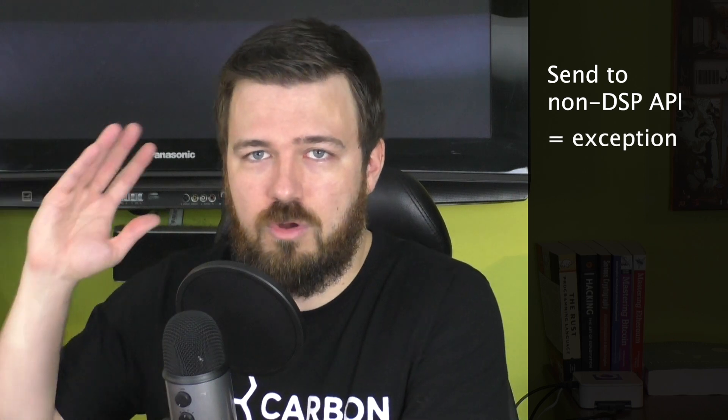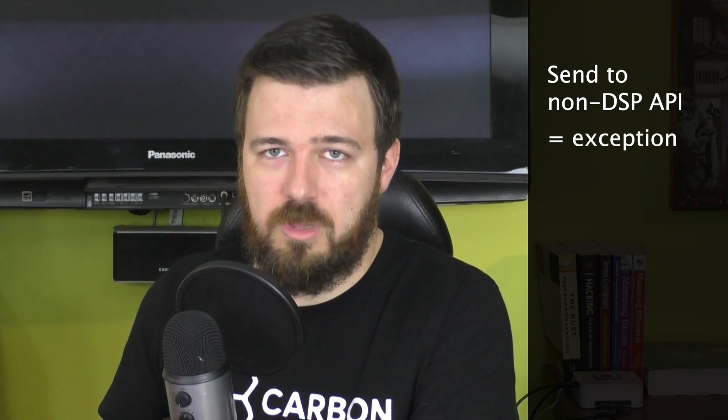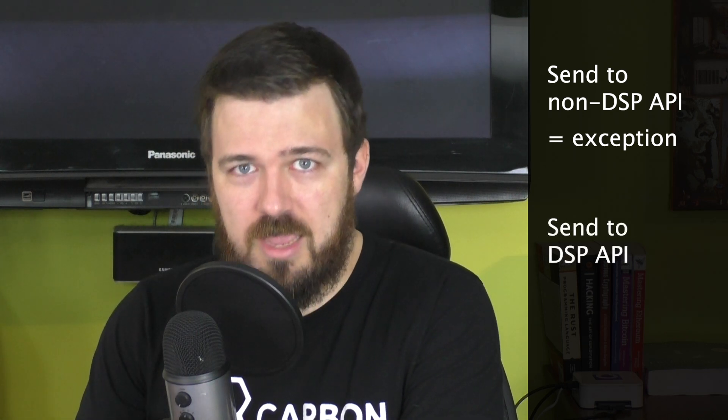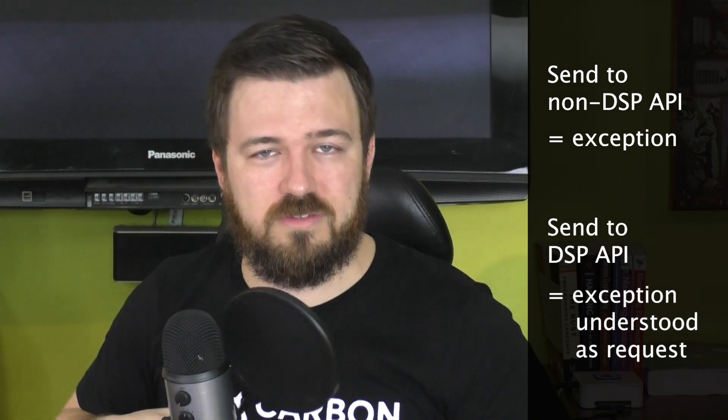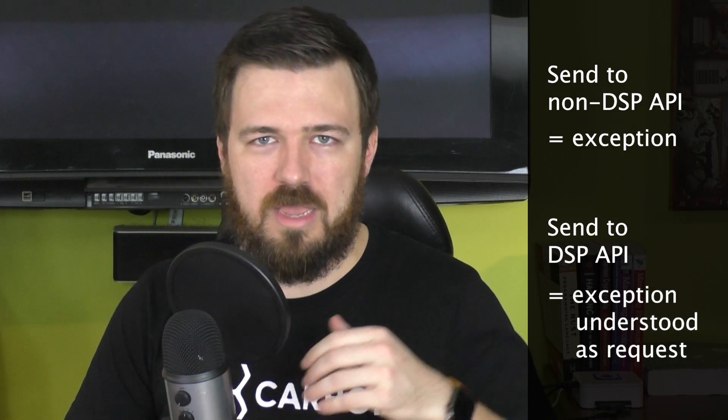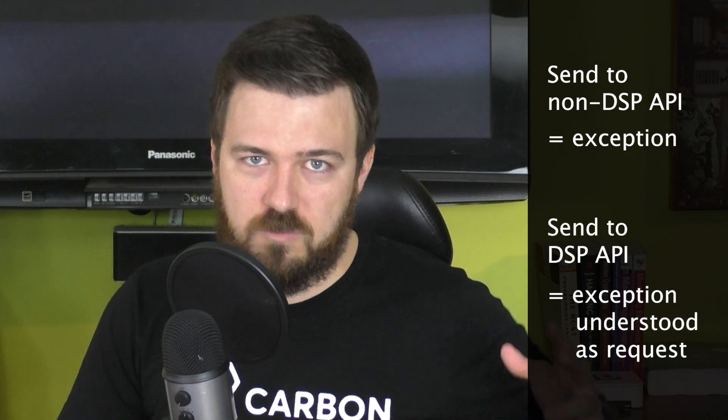If you send that smart contract request to a node that doesn't have a DSP — a non-DSP node, like most EOS nodes right now — the code will just throw an exception, it won't even execute, won't show up on the blockchain. If you send it to a DSP node, the same thing happens: it throws an exception. But the DSP is configured to realize that that kind of exception is a request for services. So once your command throws an exception, the DSP realizes it needs to step in and provide what you're asking for — whether it's a random number, some information from a web oracle, or something stored on IPFS. It provides that information and then executes the transaction. This is a really fascinating way to soft fork into a new second layer around EOS.